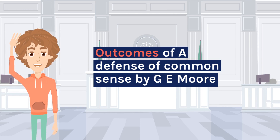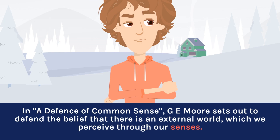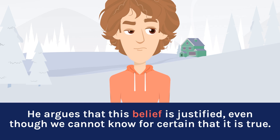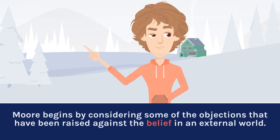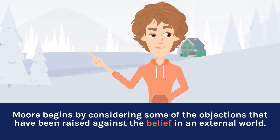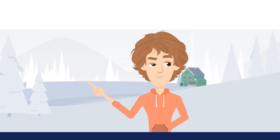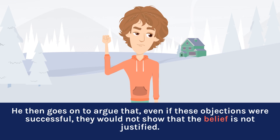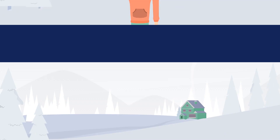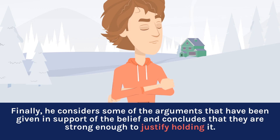In 'A Defense of Common Sense,' G.E. Moore sets out to defend the belief that there is an external world, which we perceive through our senses. He argues that this belief is justified, even though we cannot know for certain that it is true. Moore begins by considering some of the objections raised against the belief in an external world, and argues that even if these objections were successful, they would not show that the belief is not justified. Finally, he considers arguments given in support of the belief and concludes that they are strong enough to justify holding it.